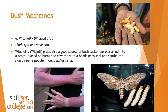Number six is the witchery grub. Witchery grubs — also a good source of bush tucker — were crushed into a paste, placed on burns, and covered with a bandage to seal and soothe the skin, by some people in central Australia. It's not something I'd personally want to do, but having experienced sunburn here in Australia with my pale Scottish skin, if it stopped the pain, most people would probably agree to it.